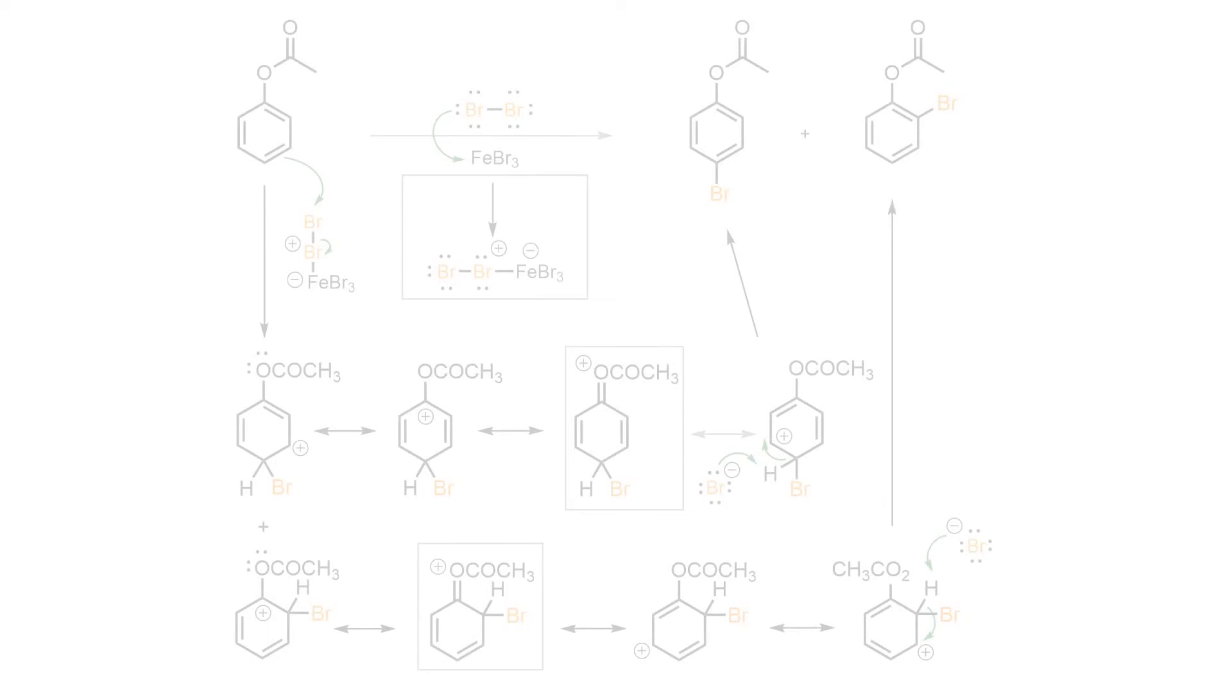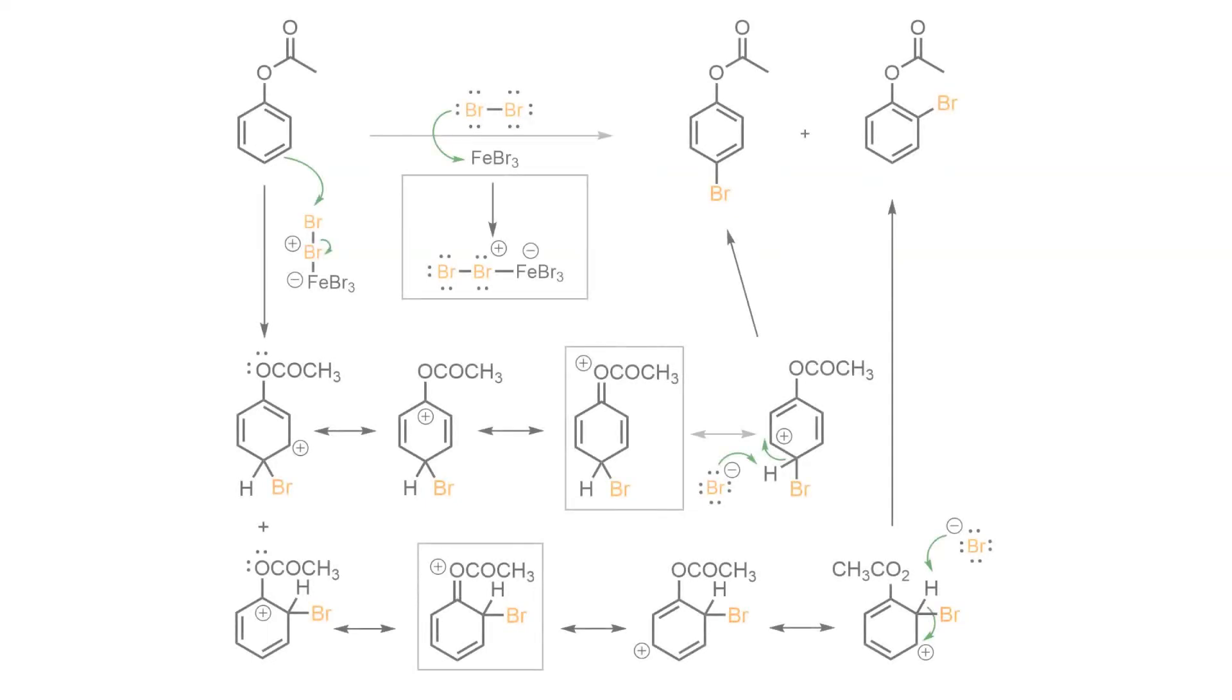Despite the carbonyl of the acyl group being electron-withdrawing, the lone pair of the phenolic oxygen is still available to donate into the aromatic pi system, which makes the cycle activated and more nucleophilic.